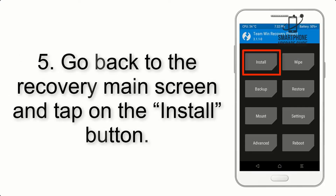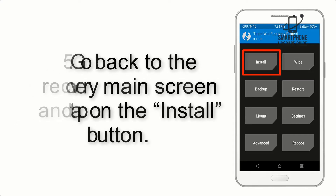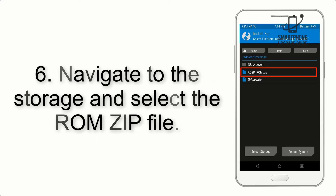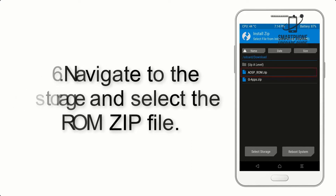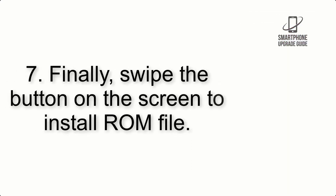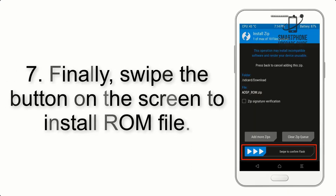Step 4: Swipe the button to wipe the device. Step 5: Go back to the recovery main screen and tap on the Install button. Step 6: Navigate to the storage and select the ROM zip file.